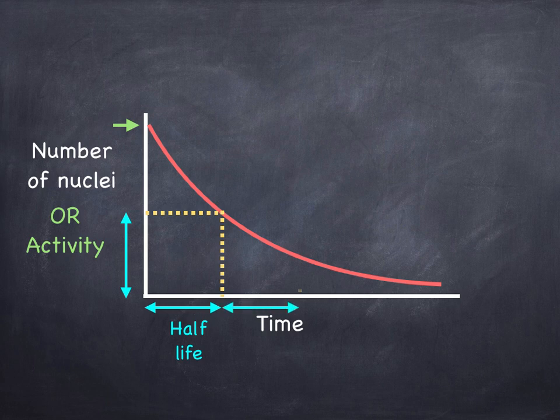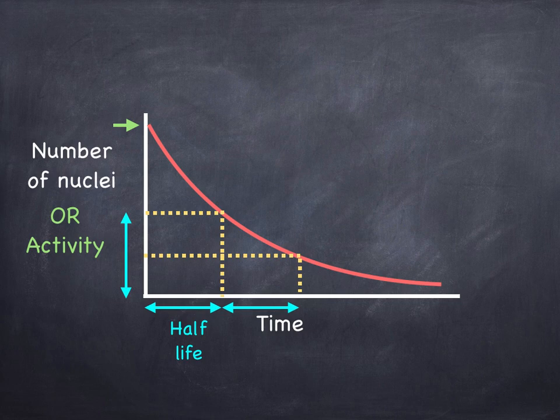If that time passes again, the second half-life has passed, then the number of nuclei will half again. So you would then have a quarter of the nuclei that you originally started with.